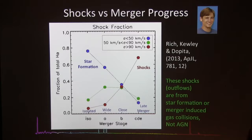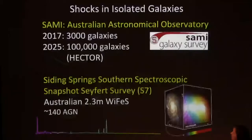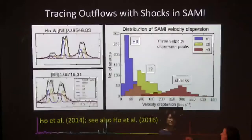We can also measure shocks in isolated galaxies, done with the SAMI survey. SAMI is a southern version of MaNGA, but we were first. We're measuring 3,000 galaxies with integral field data by 2017, and in 2025 we aim to have 100,000 galaxies. We've just been given a grant to begin building our Hector spectrograph, which will be a robotic piezo-electronic positioner for our fiber bundles. SAMI has high spectral resolution in the red — a red arm and blue arm. We choose low resolution in the blue to cover the O2 line for metallicity, and R=5,000 in the red for beautiful line decomposition to measure shocks.